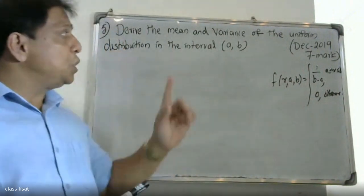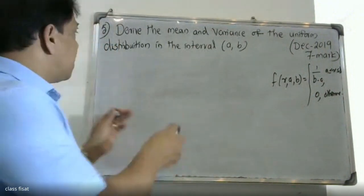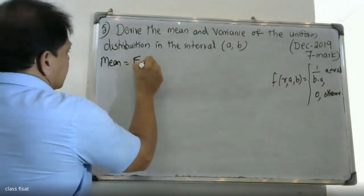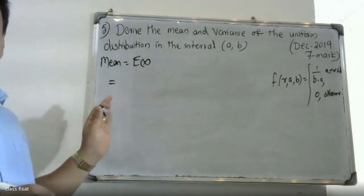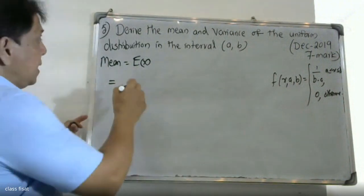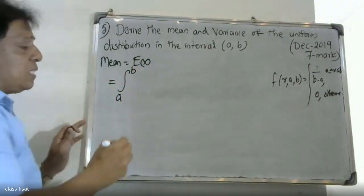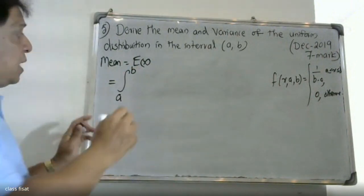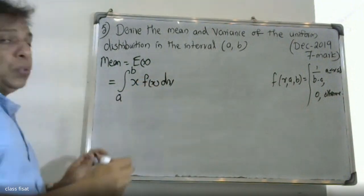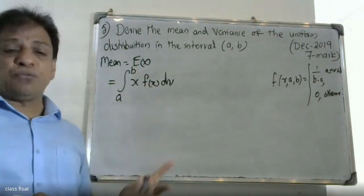This is a uniform distribution. Now for the mean: mean is equal to expectation of X. Mean equals expectation of X, which is the integral from a to b of x into f(x) dx — lower limit a, upper limit b, x into f(x) dx.